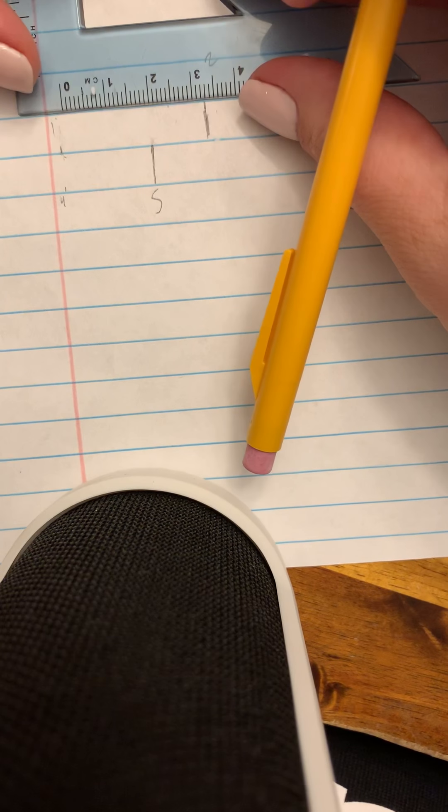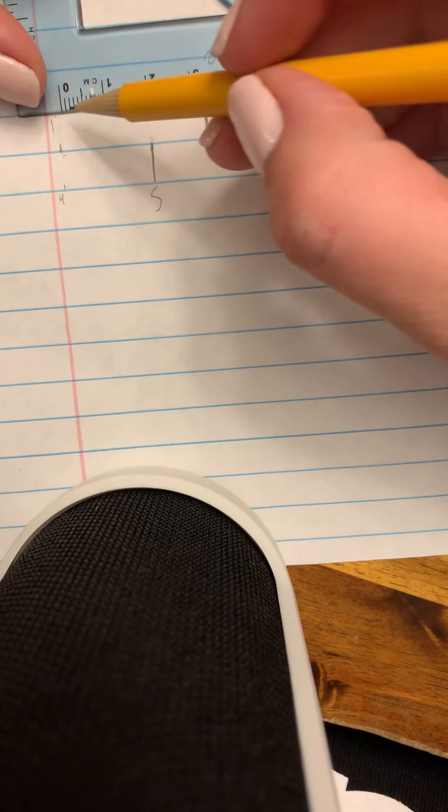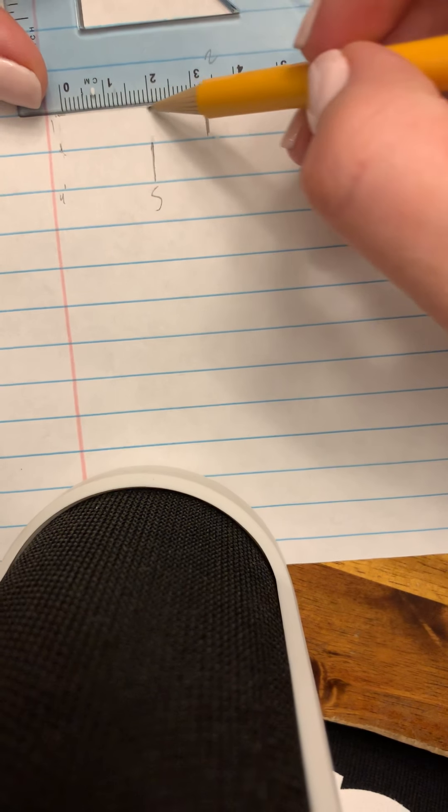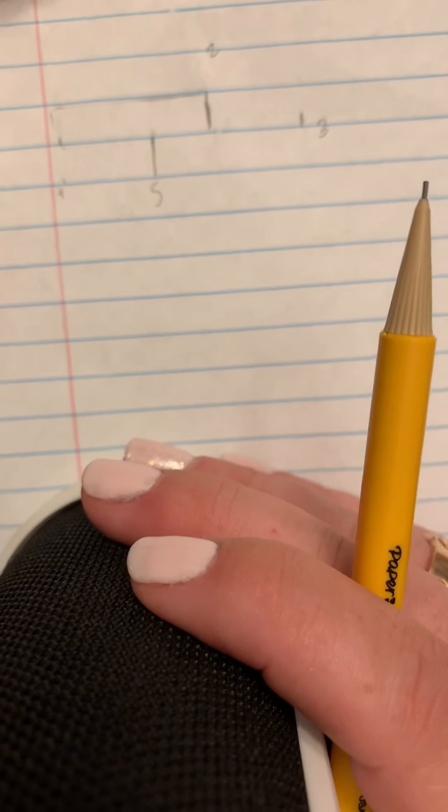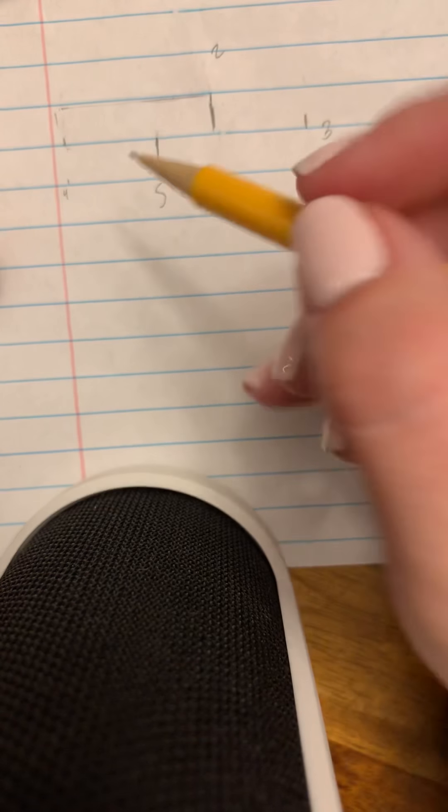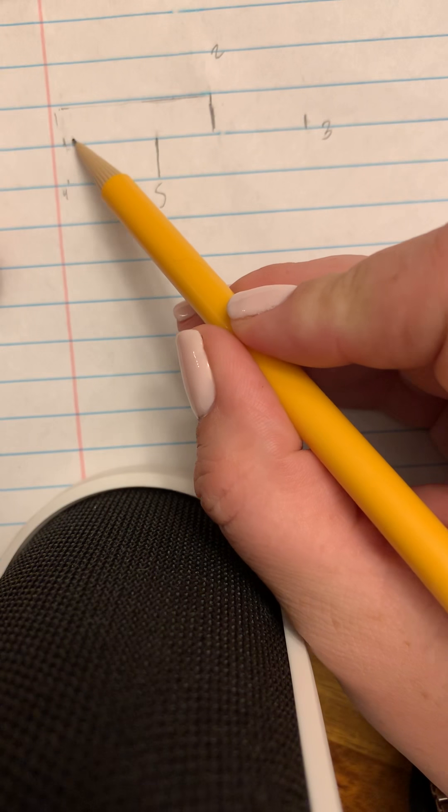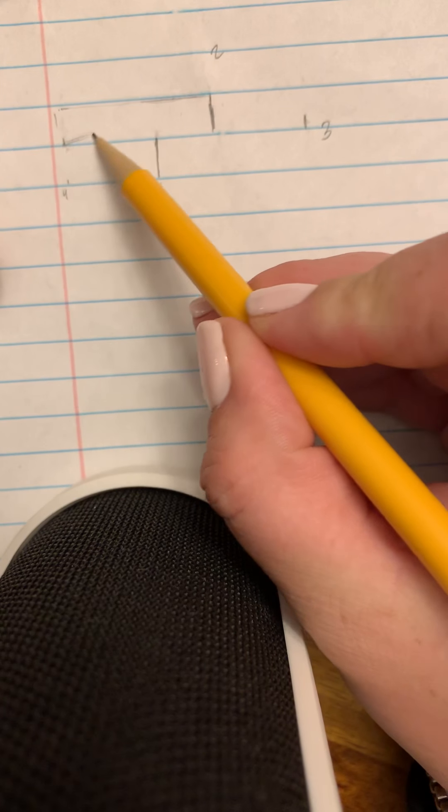You can just draw a light line so you know how high to go. I like to sketch it out and then clean up later. I like to go from both sides.